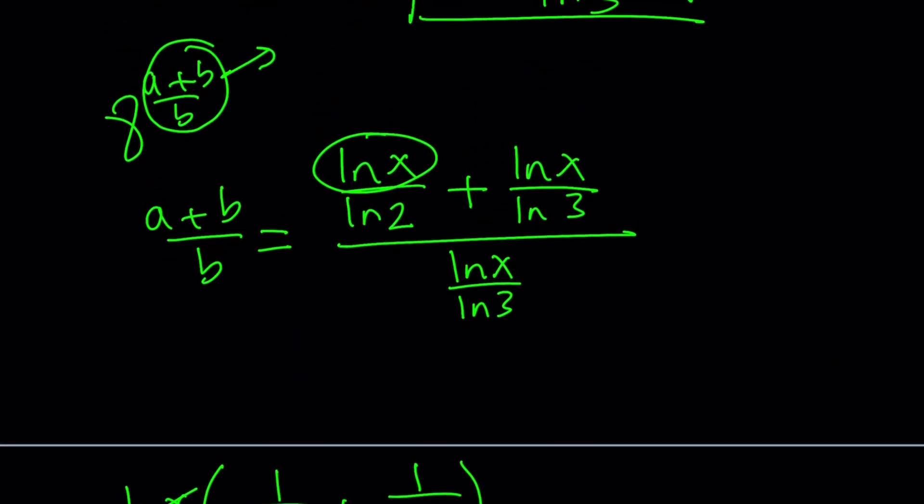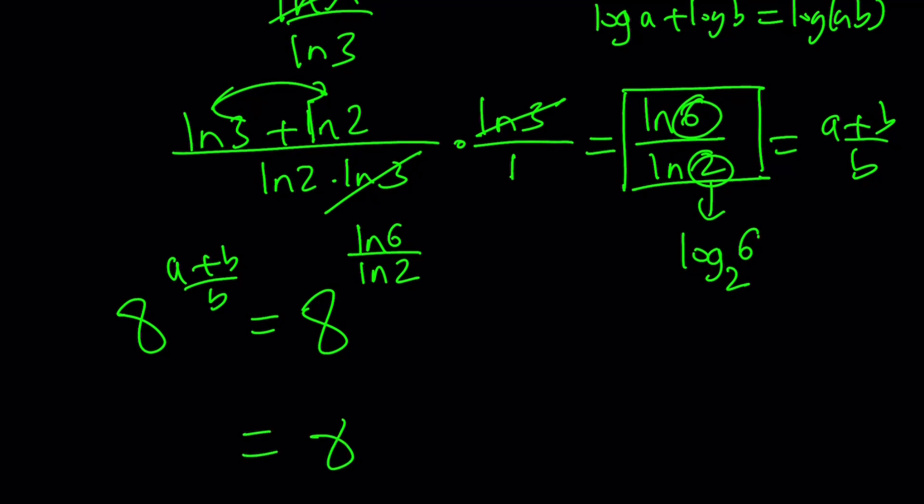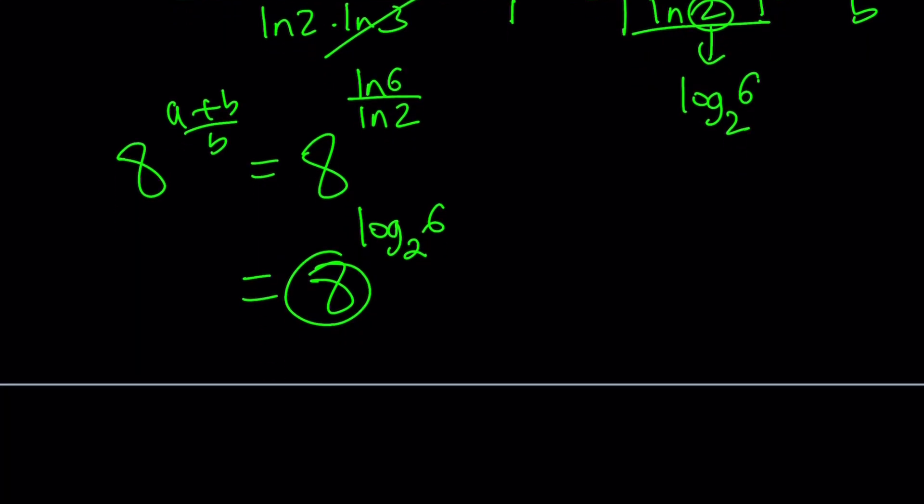Now we have to use 8 as a base. So we're trying to evaluate 8 to the power a plus b over b, which is 8 to the power ln 6 over ln 2. At this point, it might be helpful to write this using change of base formula backwards. So this can be written as log 6 with base 2, because 2 goes here and 6 goes here. So now this becomes 8 to the power log 6 with base 2. But 8 can be written as 2 to the third power.